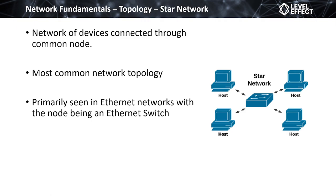Now that we understand service regions of networks, let's talk about topologies. There are a few core topologies we'll cover — there are more, but I'm focusing on the more common ones. Starting with a star topology: a star topology is a group of devices that use a common node to communicate. There's a central authority in how we send data from host to host. This is the most common topology you're going to come across.